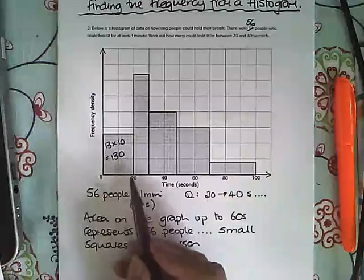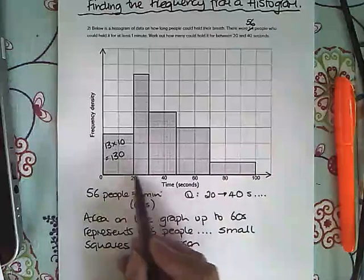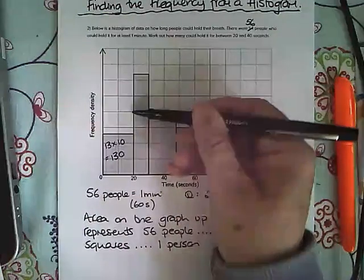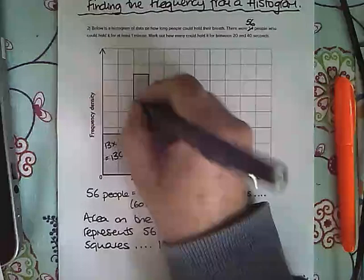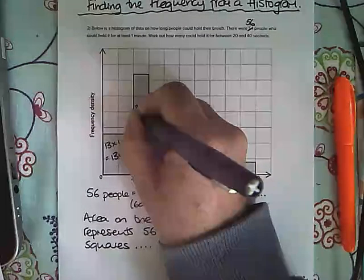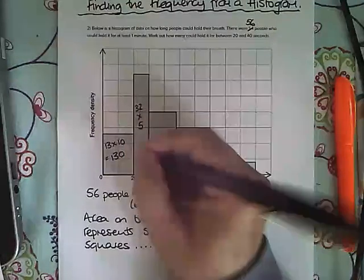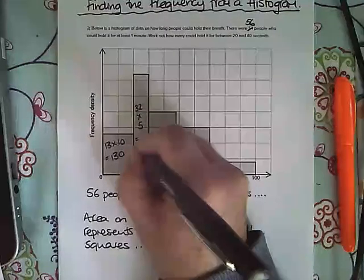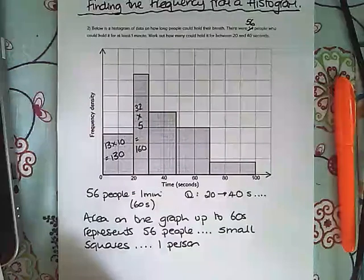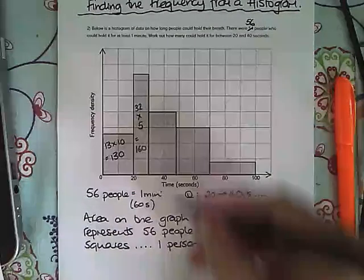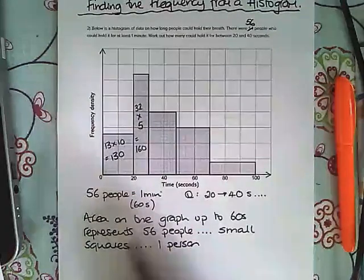This section here is 32 tall, and I'm going to times that by 5 wide. 32 times 5 is 160 small squares. Then I'm only going up to the 60, so I've got to do this 40 block next.